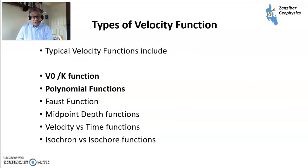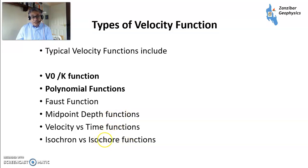There are different types of velocity function. I'm going to talk about V0K and polynomials. There are others: the Faust function, used quite a lot in the Gulf of Mexico, invented by Dr. Faust in the 1950s; midpoint depth functions, popular in some areas; velocity versus time functions; and isochronal functions, popular in the Southern North Sea. But V0K is the most popular, with polynomials used in some areas as well.